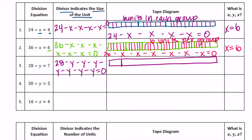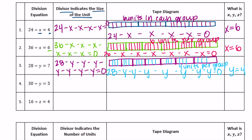I'll separate into seven groups. And 28 divided by 7 is 4, so in each group I'm going to have four. So we have 28 minus Y seven times equals zero, and there are four units per group. So Y is equal to four.